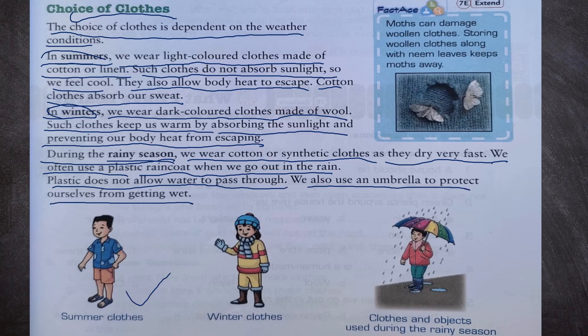We can see summer clothes, winter clothes, and items used during the rainy season like an umbrella and raincoat. Moths can damage woolen clothes. Storing woolen clothes along with neem leaves keeps moths away. So we should store our clothes carefully.